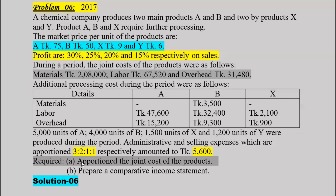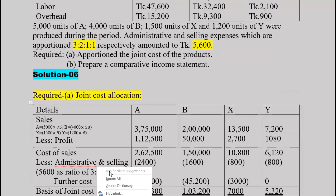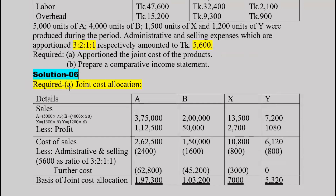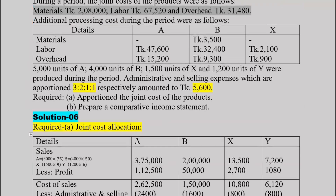Now for joint cost allocation: we want to allocate the joint cost across products A, B, X, and Y. The joint cost allocation table will be constructed with columns for each product. Joint cost allocation is the main focus here.